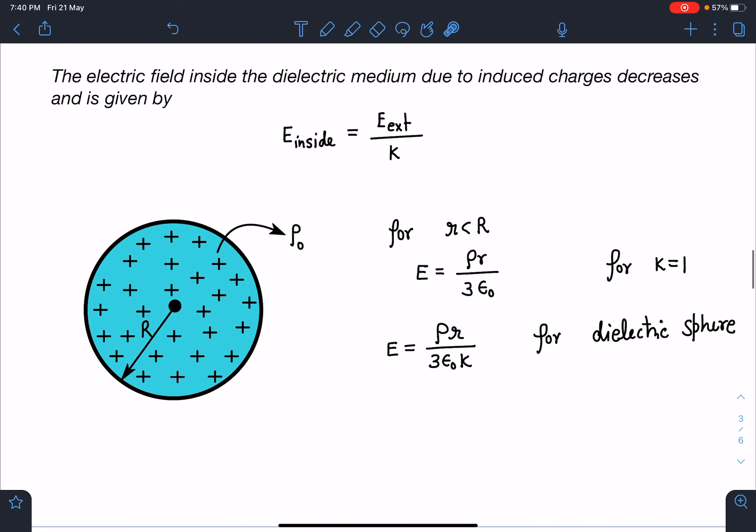So here you can see for r less than R if it was k equal to 1, suppose the standard case if we are having a solid non-conducting sphere we have ρr by 3ε. It is a very standard result. So if we are having a dielectric sphere this field is going to be by k times. So E is equal to ρr by 3ε₀k for r less than R. So in this case field will be discontinuous.